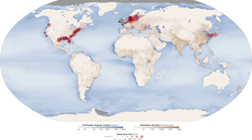Researchers from the Baltic Nest Institute reported that dead zones in the Baltic Sea have grown from approximately 5,000 km² to more than 60,000 km² in recent years. Some of the causes behind the elevated increase of dead zones can be attributed to the use of fertilizers, large animal farms, the burning of fossil fuels, and effluents from municipal wastewater treatment plants.